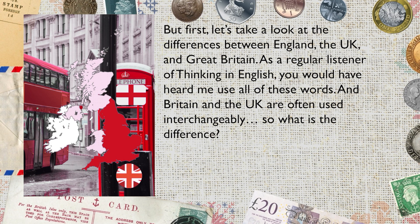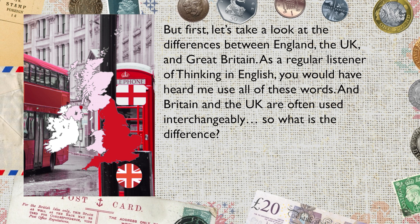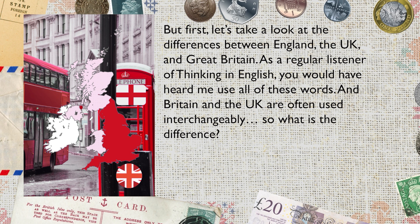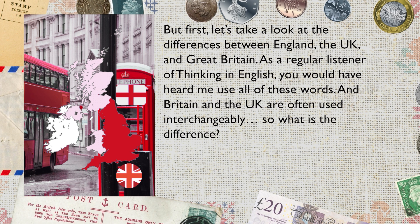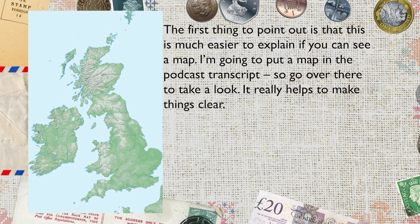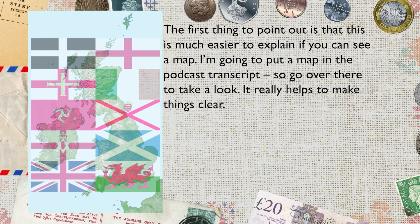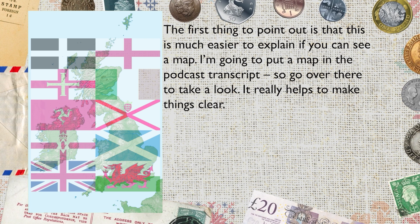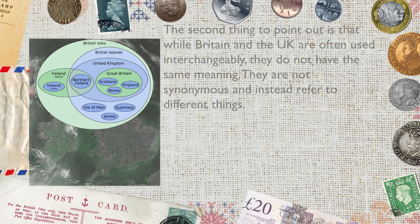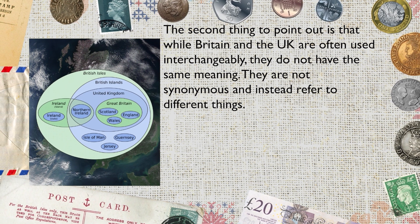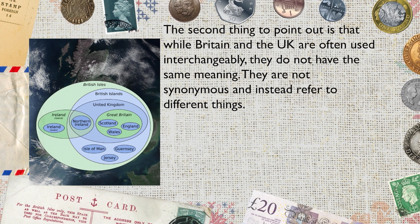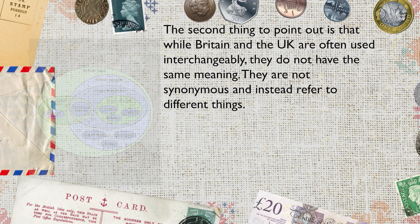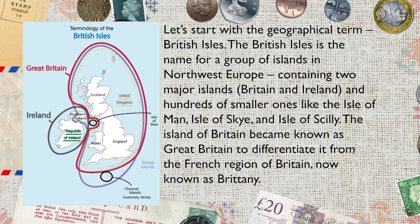First, let's take a look at the differences between England, the UK and Great Britain. This is much easier to explain if you can see a map — I'm going to put a map in the podcast transcript, so go over there and take a look; it really helps to make things clearer. While Britain and the UK are often used interchangeably, they do not have the same exact meaning. They are not synonymous and instead refer to different but similar things. Let's start with the geographical term: the British Isles.